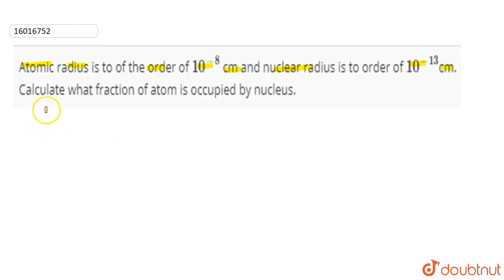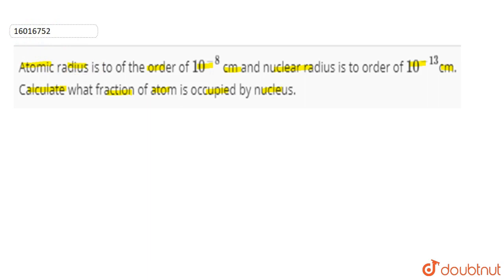So we need to calculate the fraction of the atom that is occupied by the nucleus. To find this fraction, we take the volume of the nucleus.